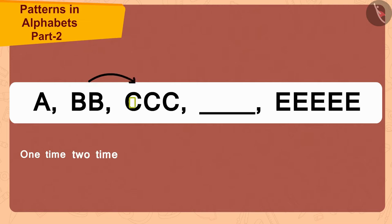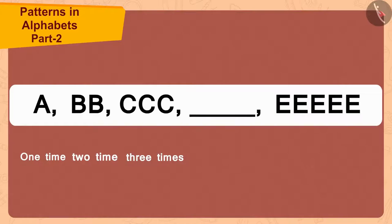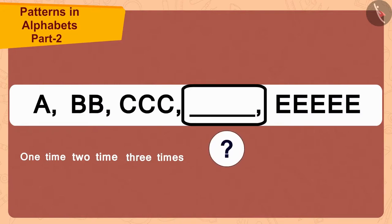And the third letter C, once more than B, has been written three times. In this way, how many times will the letter D be repeated in the blank space? Exactly four times.